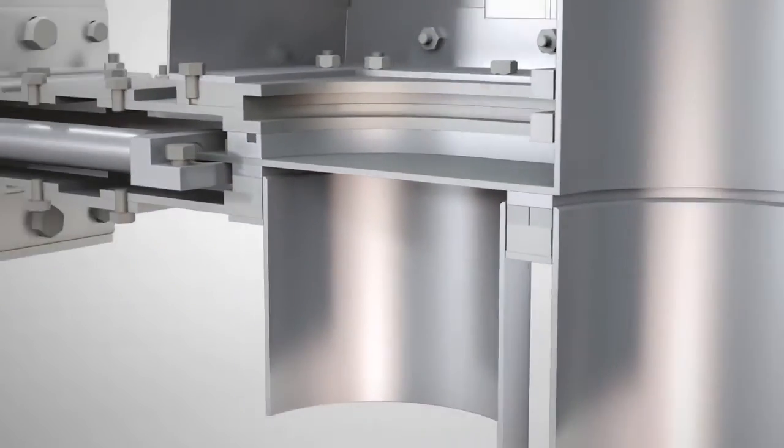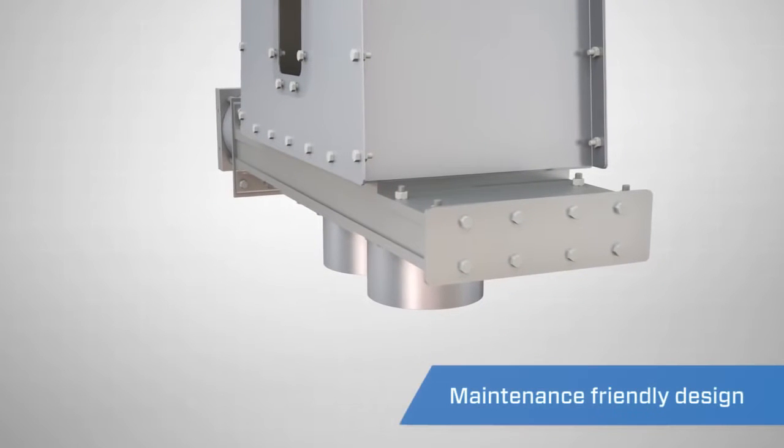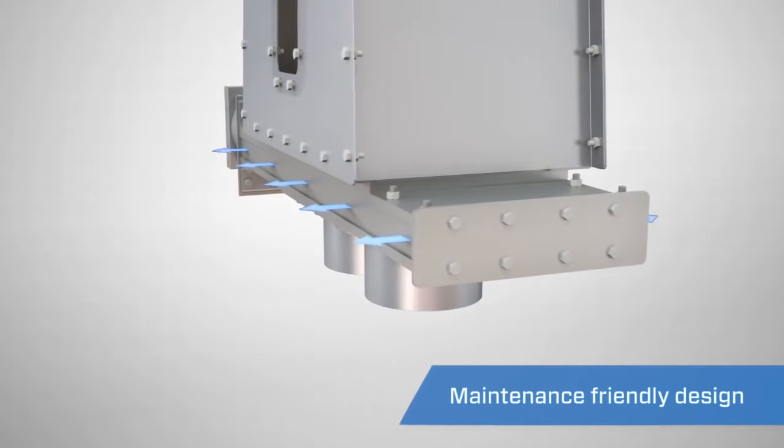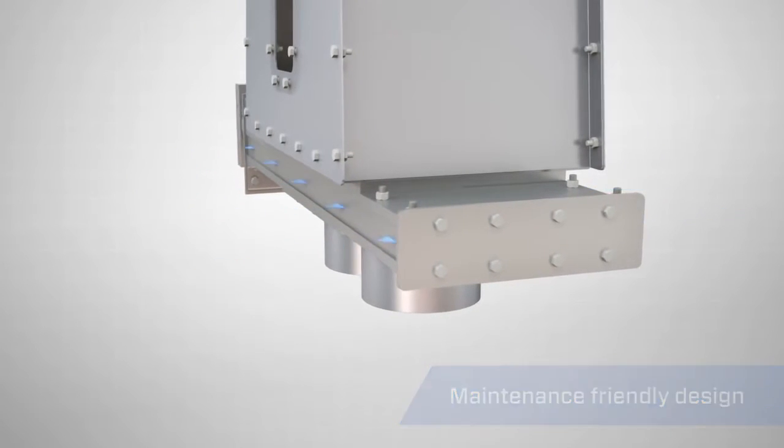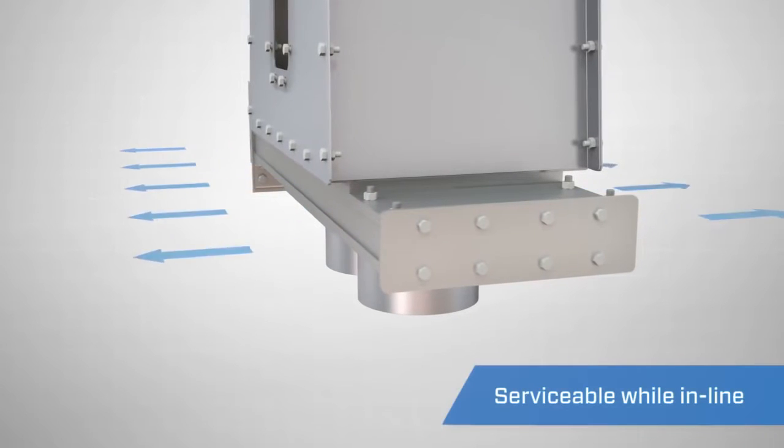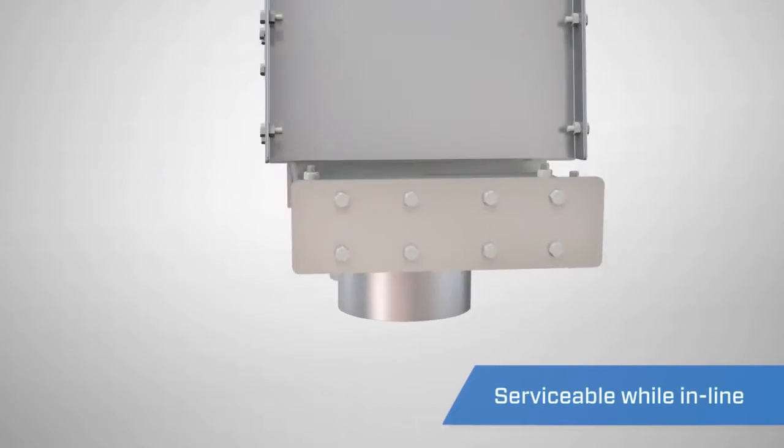One of the main features of the FlexTube Diverter is the maintenance-friendly design. If the diverter shows signs of light dusting, the diverter's removable shims allow for easy maintenance in-line while remaining in-service.